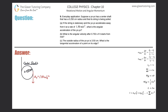Number nine, everyday application. Suppose a yoyo has a center shaft that has a 0.25 centimeter radius and its string is being pulled. If the string is stationary and the yoyo accelerates away from it at a rate of 1.5 meters per second squared, what is the angular acceleration of the yoyo?